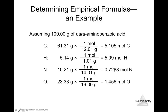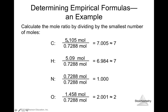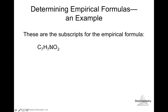Next, divide all mole values by the smallest mole value (0.7288). For carbon: 5.105 / 0.7288 ≈ 7. For hydrogen: 6.984 / 0.7288 ≈ 7. For nitrogen: it was the smallest, so 1. For oxygen: 2.00. These integers are the subscripts of the empirical formula. The empirical formula for PABA is C7H7NO2.